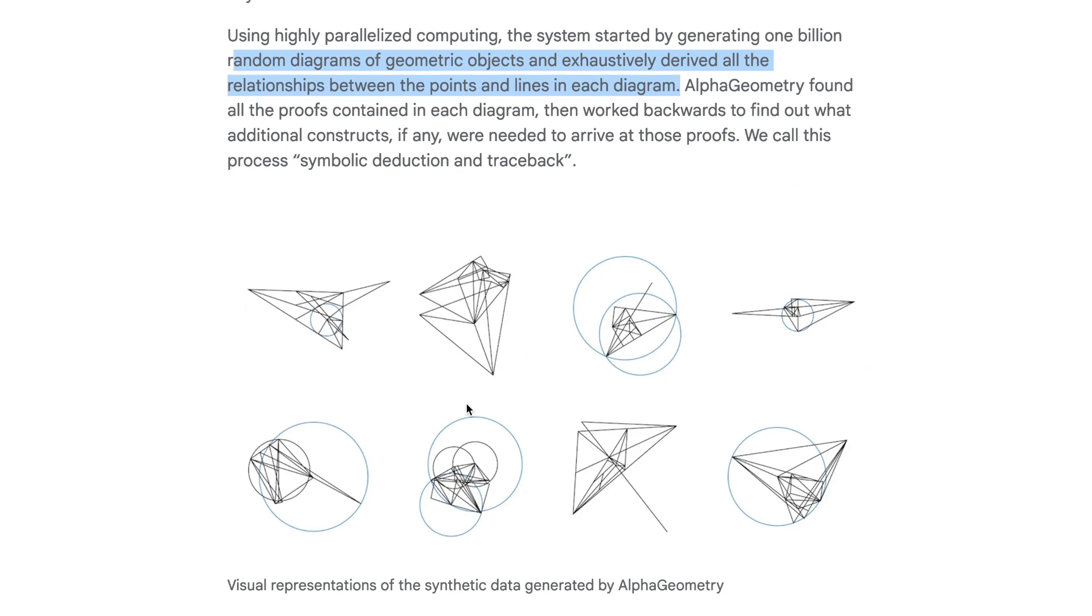So these are examples of the random objects that they generated. And then they used AlphaGeometry, found all the proofs contained in each diagram, then worked backwards to find out what additional constructs, if any, were needed to arrive at those proofs. We call this the process of symbolic deduction and traceback. Okay, so I think if you don't fully understand how this was done, that's okay. I just wanted to show you the concept of creating 100% synthetic data in this case.